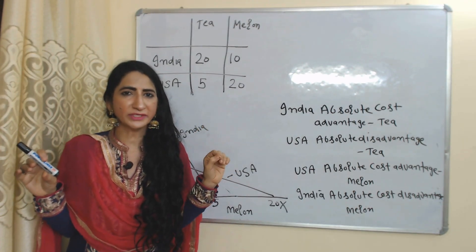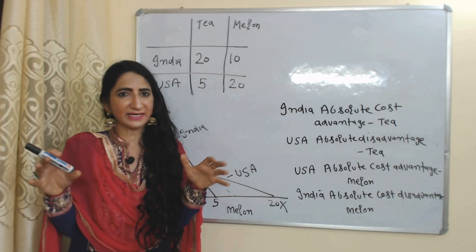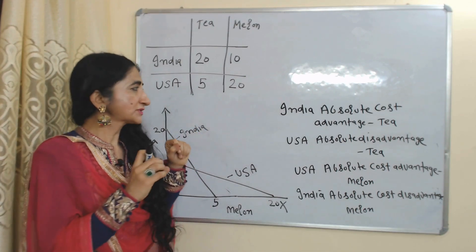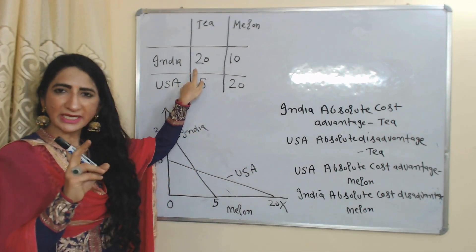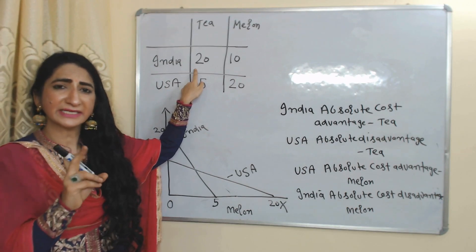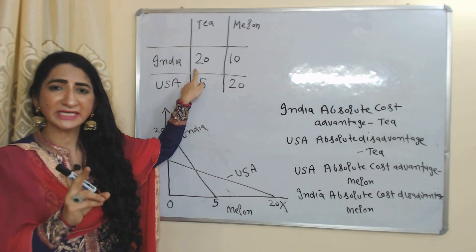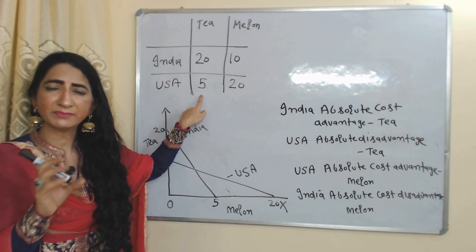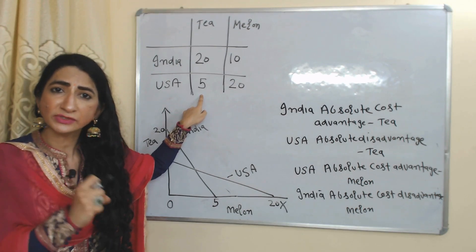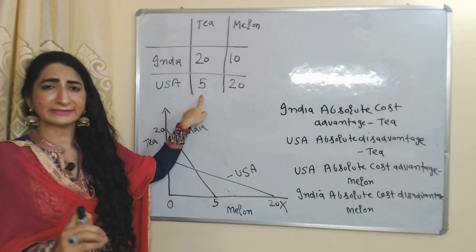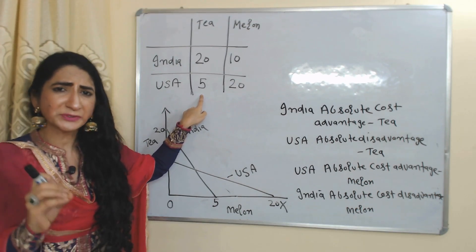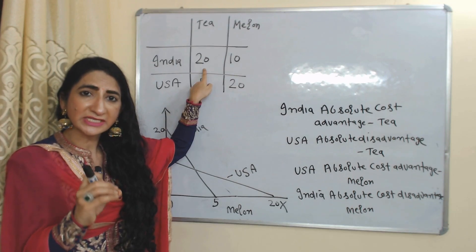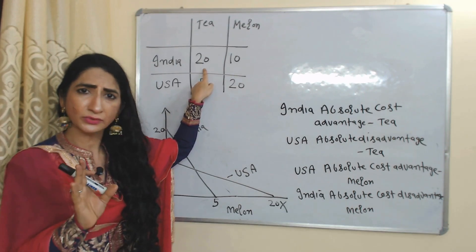We have only two countries, India and USA, and two commodities, tea and melon. Suppose by using eight hours of labor, India can produce 20 units of tea, while with the same eight hours of labor, USA can produce only five units of tea. So we can say that India has absolute cost advantage in production of tea because India can produce tea at lower cost as compared to USA.